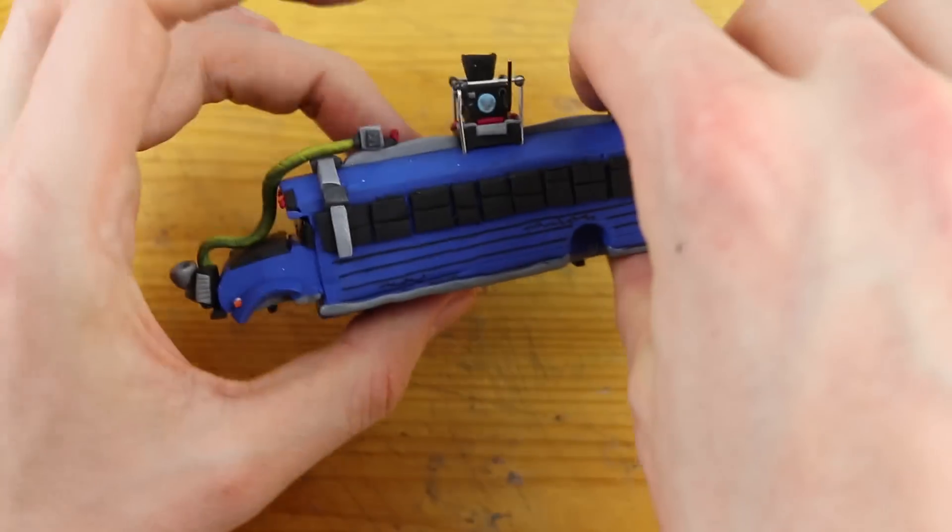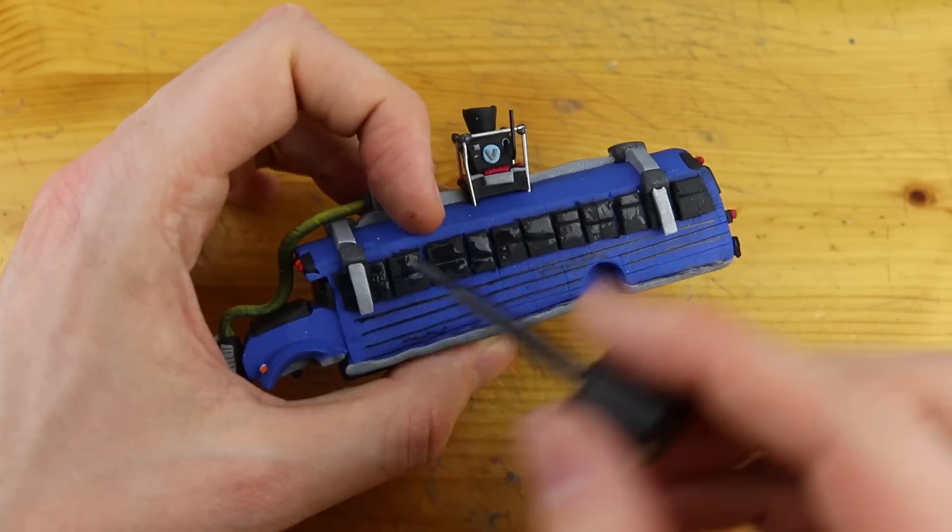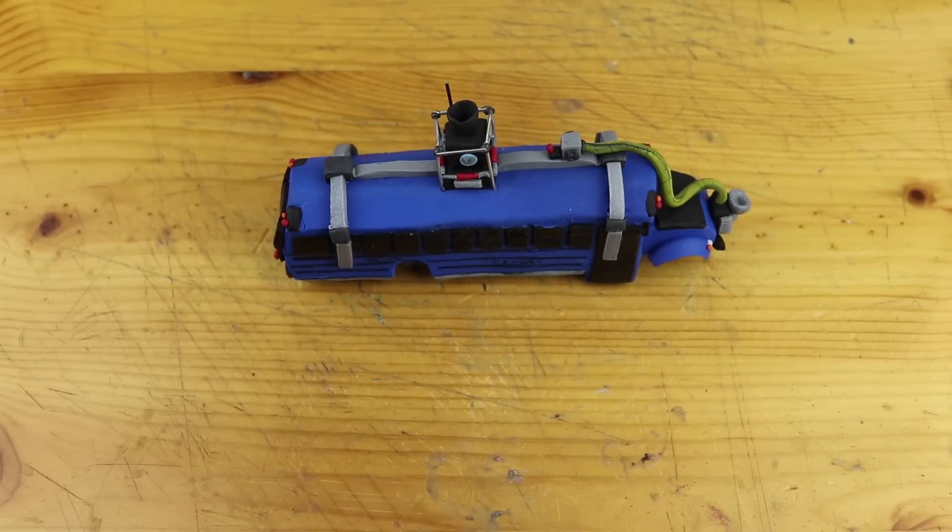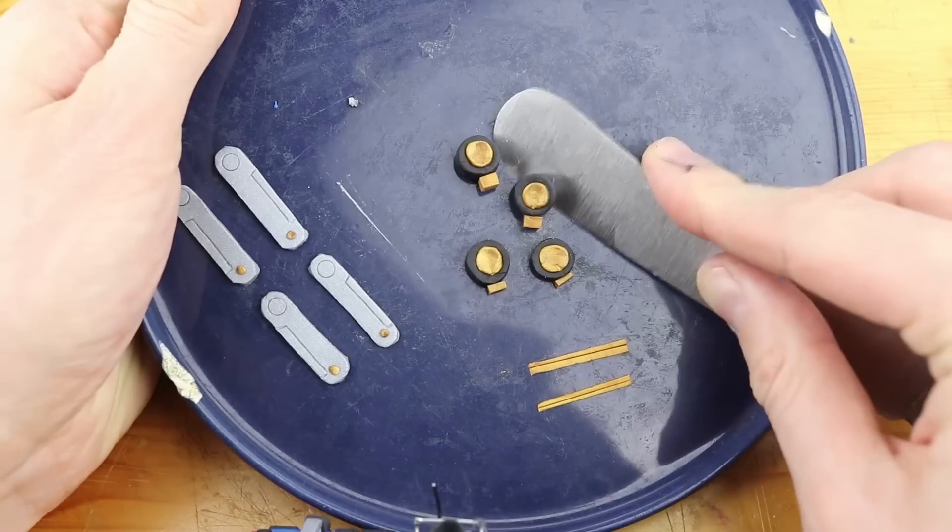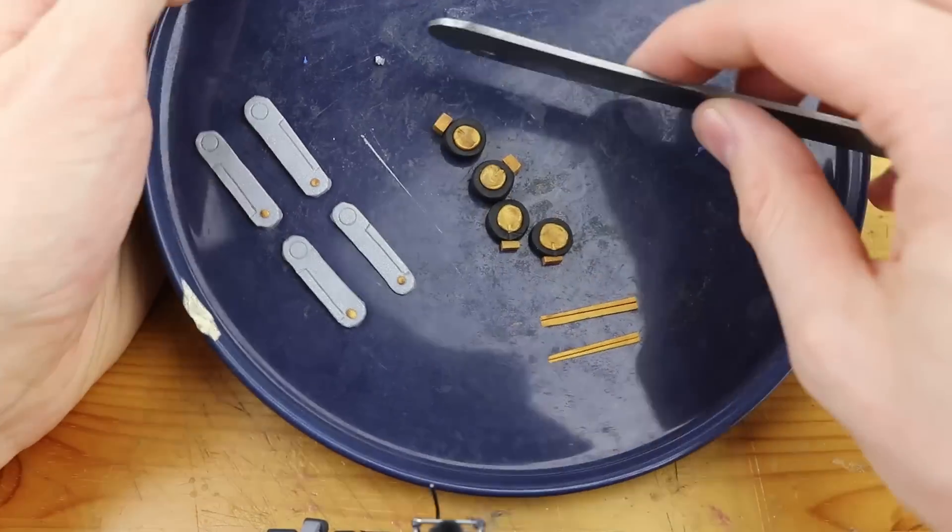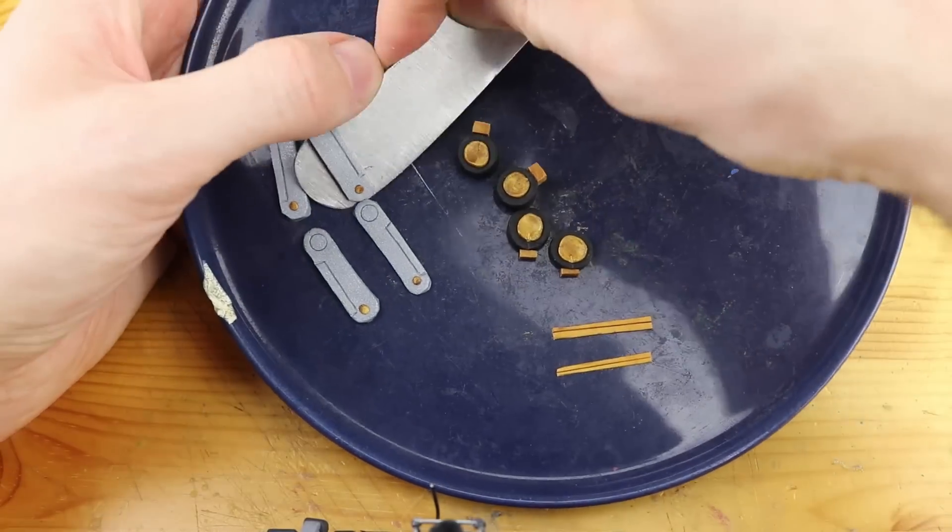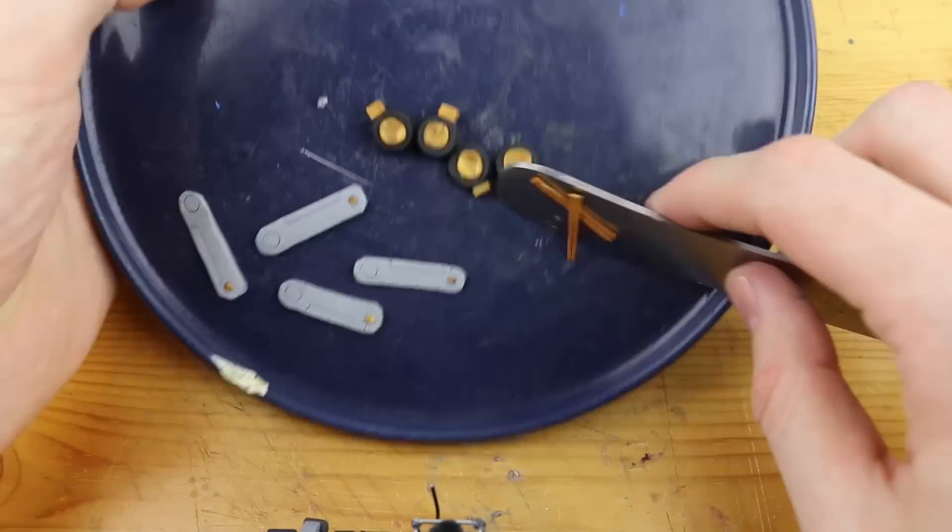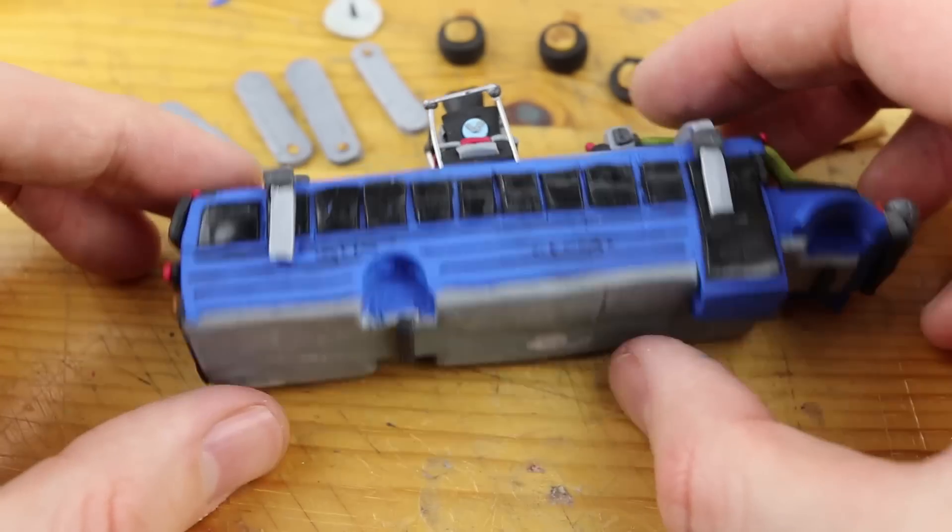I'm using the transparent polish for the windows to make them shine a little bit and now we will glue all these tiny pieces onto the bus and we will assemble the structure.